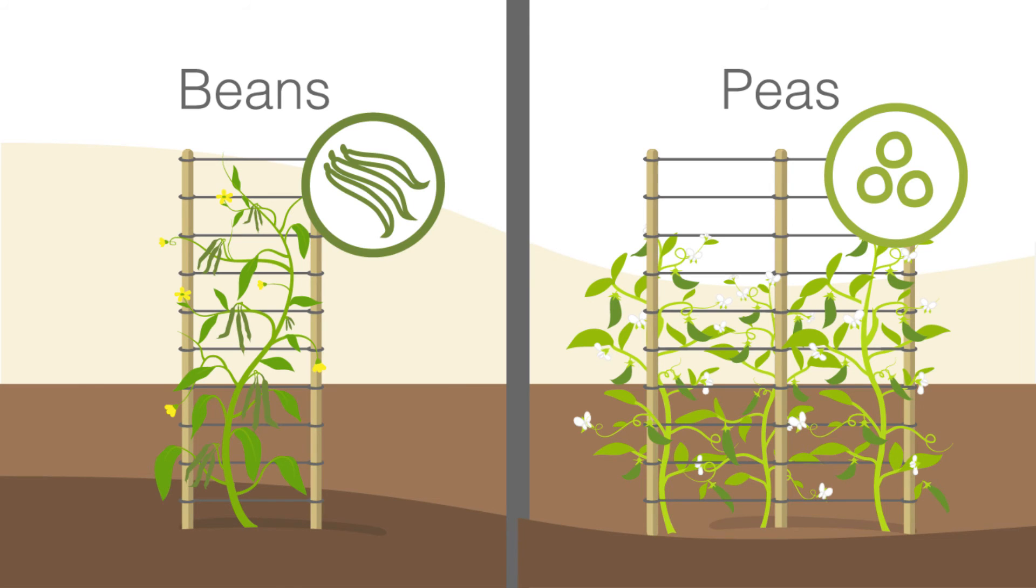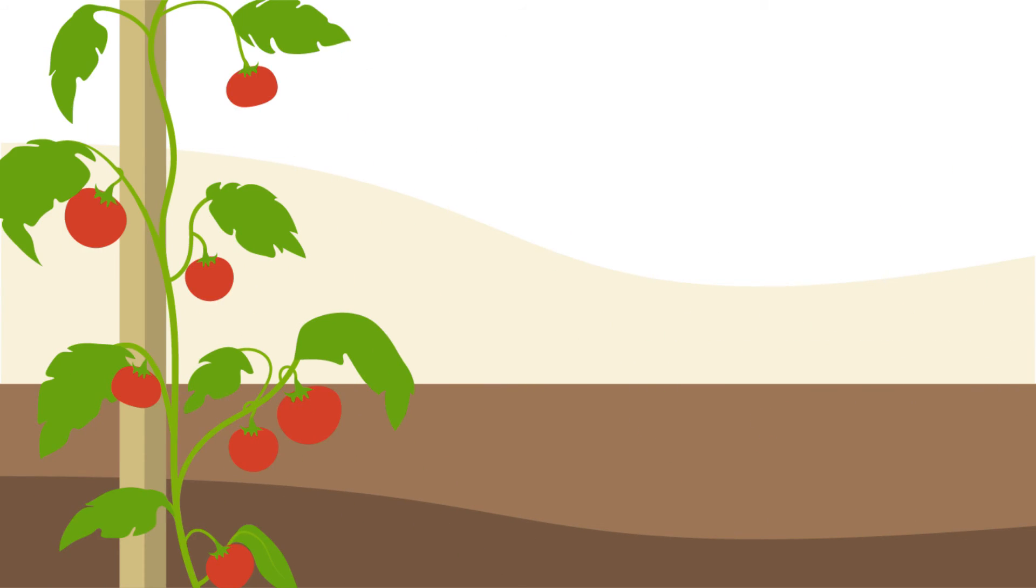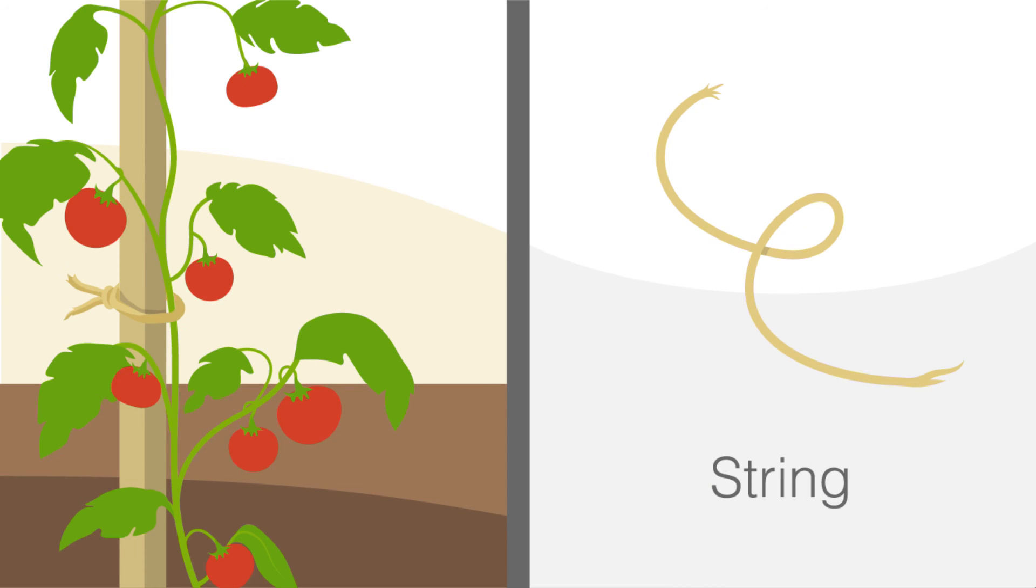Some plants can climb a trellis all by themselves. Other plants need some encouragement. Use a piece of string to gently tie the plant stem to the trellis. Keep the tie very loose so that the plant stem can continue to grow in thickness.